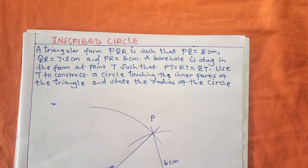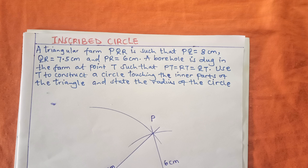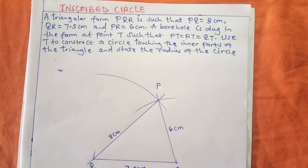Hello guys, welcome to today's presentation. I'm going to teach you about constructing the inner circle using a question to explain the topic. A triangle PQR is such that PQ is 8 centimeters, QR is 7.5 centimeters, and PR is 6 centimeters. A point T is such that PT equals RT and QT. We use T to construct a circle touching the inner part of the triangle and state the radius of the circle. I have already constructed the triangle.